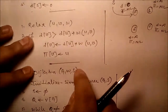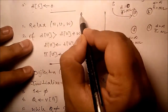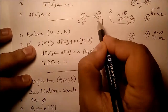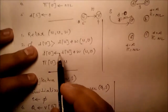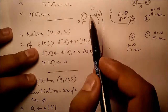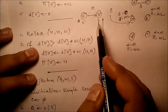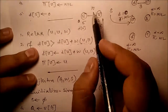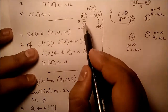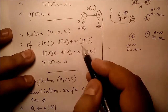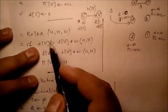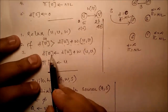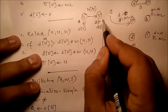Now the relax portion: relax(u, v, w). Suppose u and v are two nodes. If d[v] is greater than d[u] plus the weight between u and v, then we update. For example, if d[u] = 5 and weight = 10 and d[v] = 24, then 24 > 5+10=15, condition is true, so d[v] becomes 15.